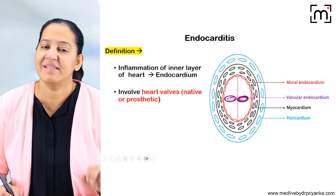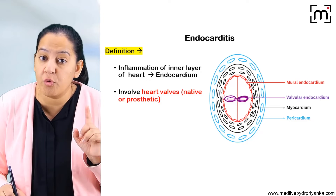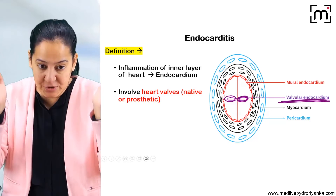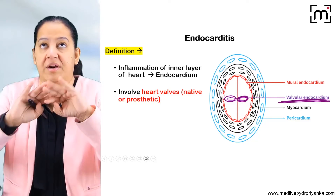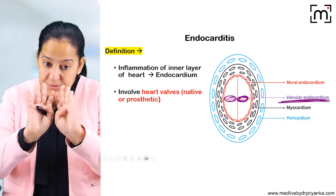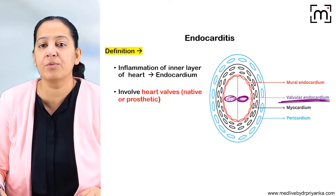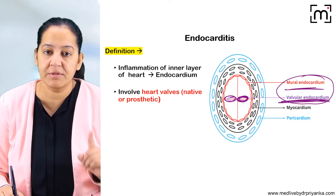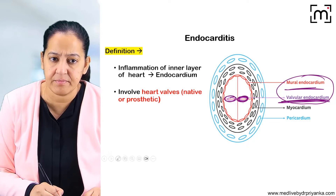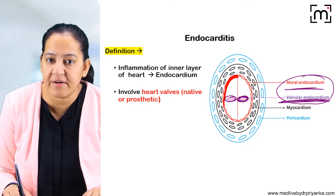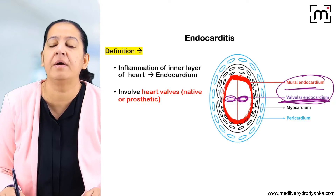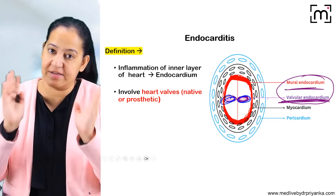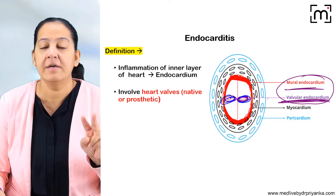The walls are made up of endocardium. There are two types of endocardium: the endocardium present over the walls is known as valvular endocardium, and the endocardium present on the rest of the heart — the mural endocardium. Have a look at the diagram: the blue one is valvular endocardium, present over the walls, and the red one is the mural endocardium, present in the rest of the heart. These are the two types of endocardium.